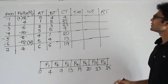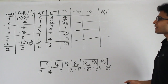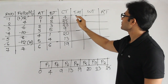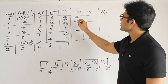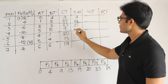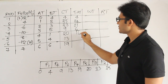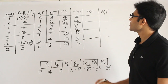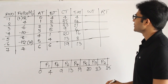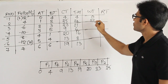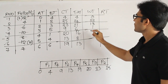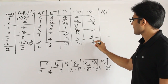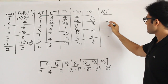Turnaround time is completion time minus arrival time: for P1 it is 4, P2 is 24, P3 is 21, P4 is 6, P5 is 16, P6 is 8, and P7 is 13. Waiting time is turnaround time minus burst time: giving us 0, 22, 18, 1, 15, 4, and 7 respectively.